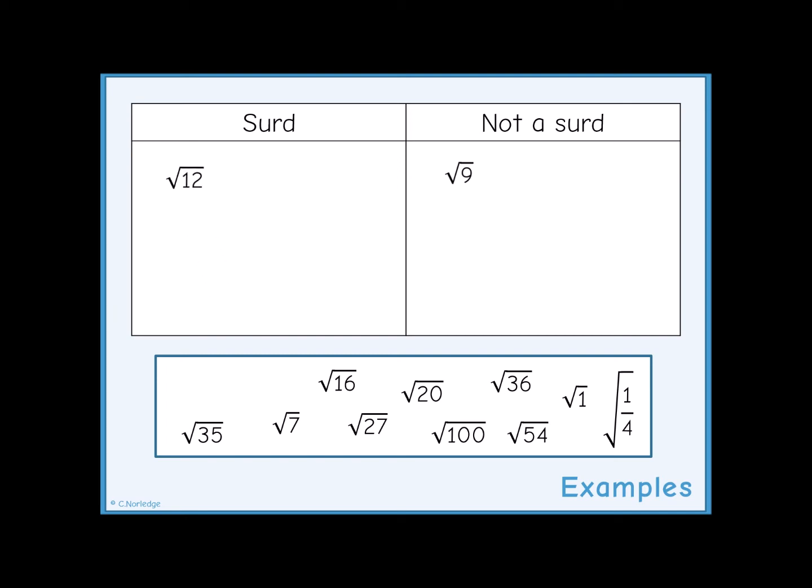If you evaluate the square root of 35 on a calculator, you get 5.91607 and so on, which is an irrational number, so root 35 is also a surd.